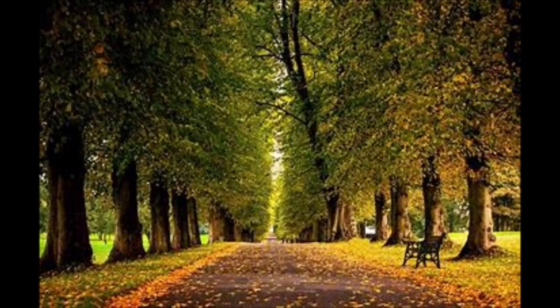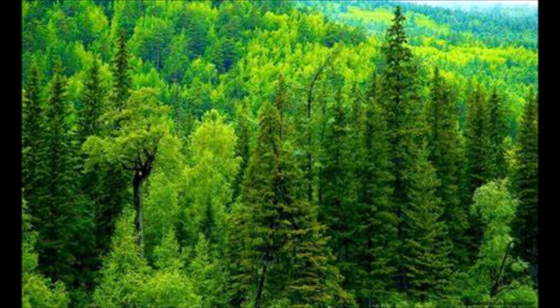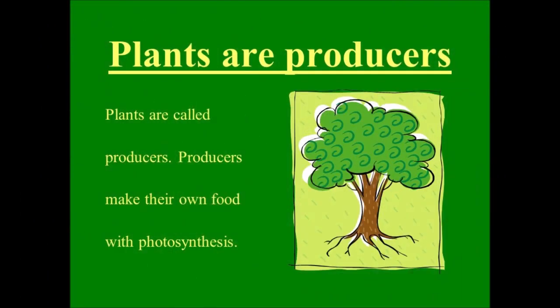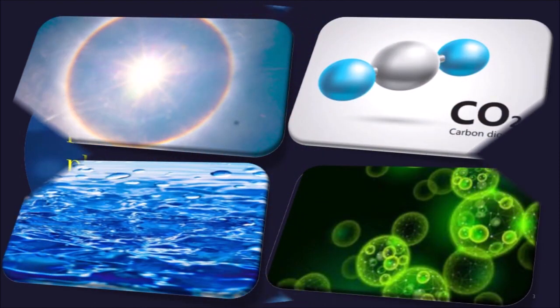Plants are of absolute necessity for life on earth. Plants are producers. They make their own food which creates energy for them to grow, reproduce and survive. They are the only living things on earth that can make their own source of food energy. The components required for preparing their food are water, carbon dioxide, chlorophyll, and sunlight.